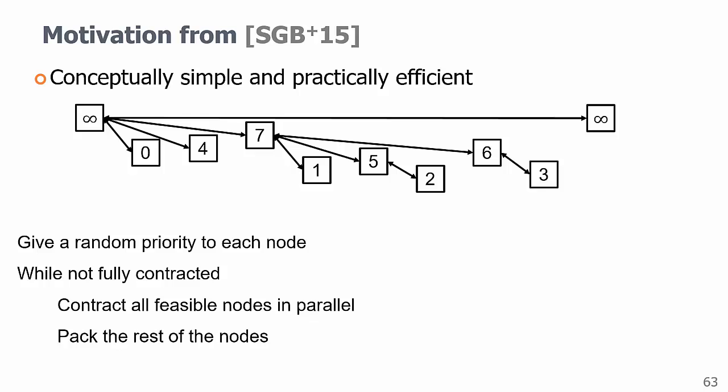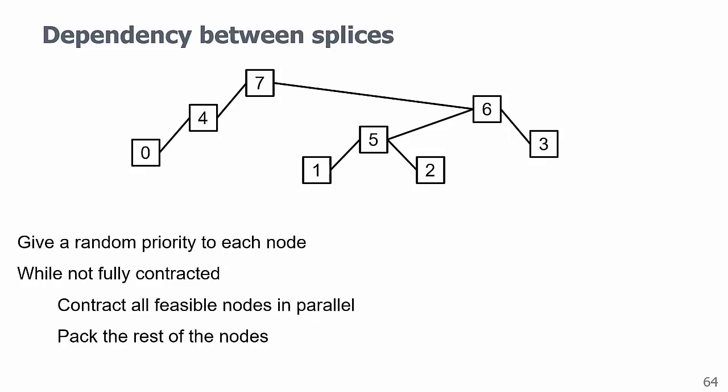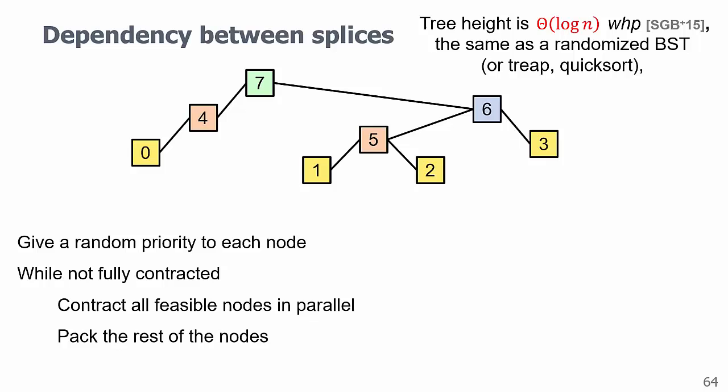We can get the dependencies between the splices by linking the nodes. And this algorithm is run by repeatedly taking out all leaves in rounds. It's shown that the tree height is theta of log n with high probability. This algorithm is very fast in practice, but it still has disadvantage that it runs in rounds and needs synchronization between rounds and the overhead of packing in each round.